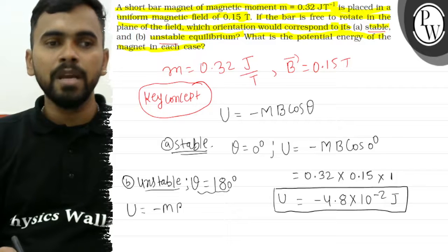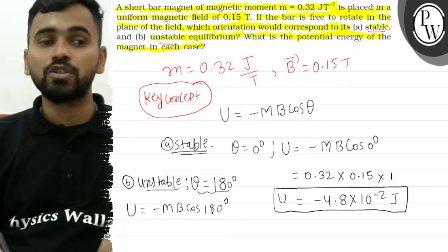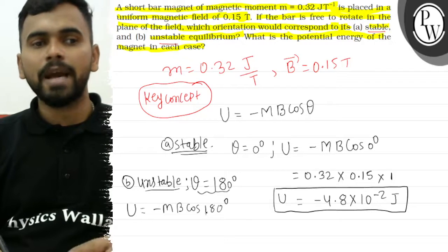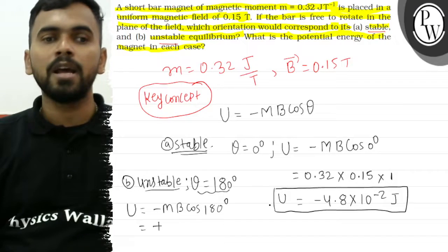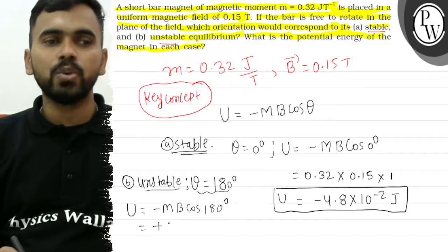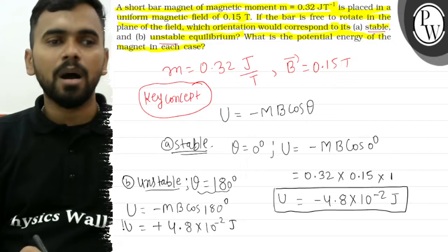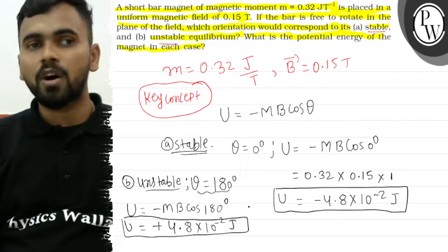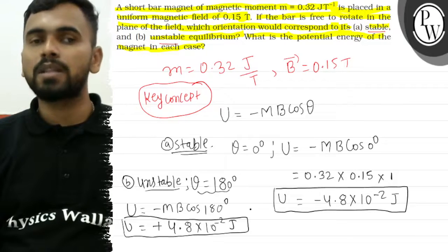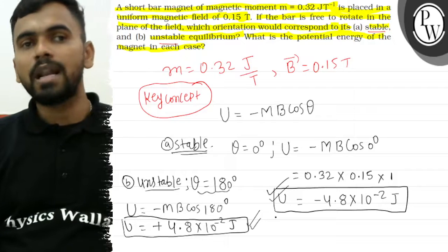Cos 180 degrees equals minus 1, so the negative signs cancel, making it positive. The m and B values are the same, so the energy we found earlier comes out positive: plus 4.8 times 10 to the power minus 2 joules.